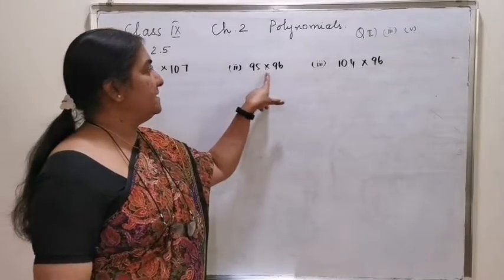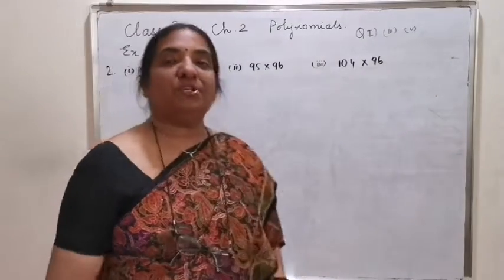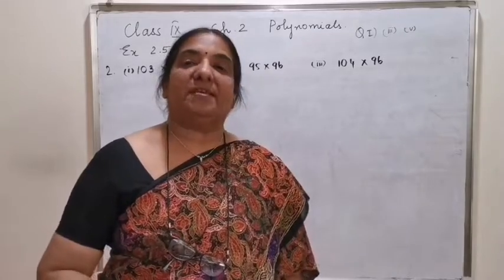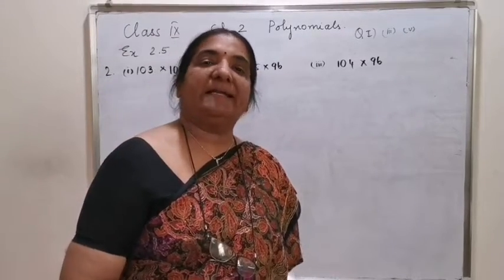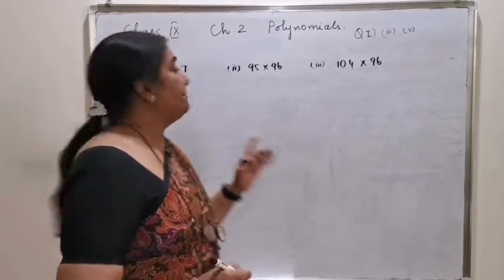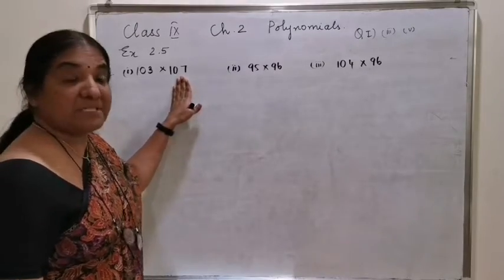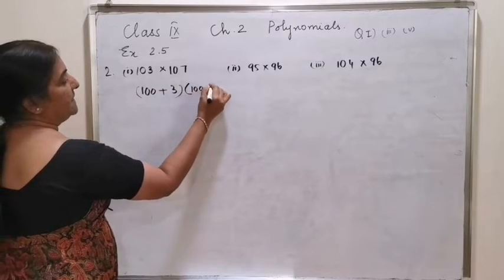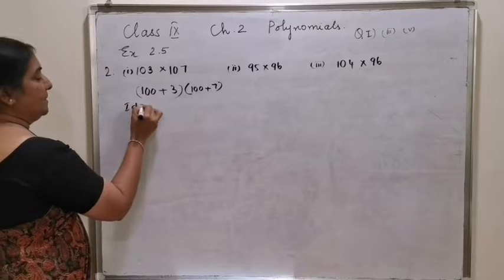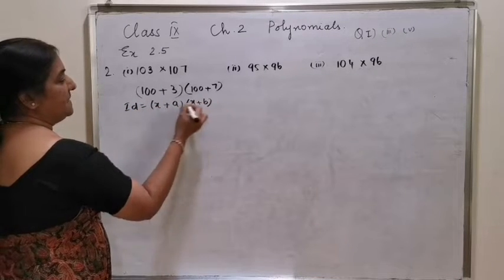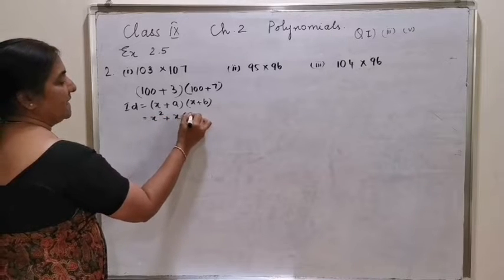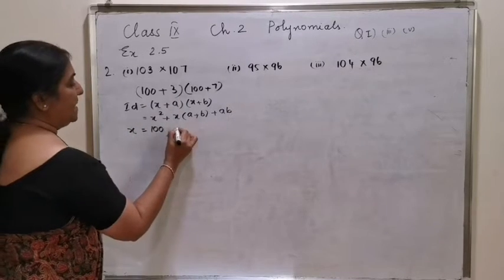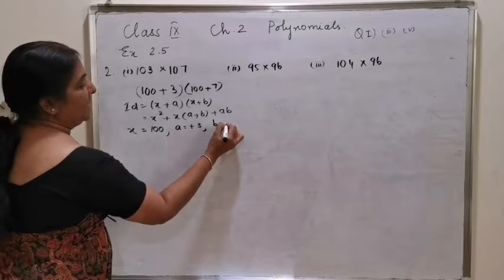Question number 2: 103 into 107, 95 into 96, 104 into 96. Without direct multiplication, evaluate the following using any one identity. 103 into 107 can be split as 100 plus 3 into 100 plus 7. The identity you will be using is x plus a into x plus b equals x square plus x into a plus b plus ab, where your x value is 100, a value is positive 3 and b value is positive 7.